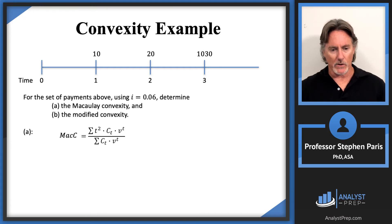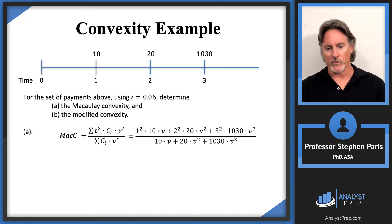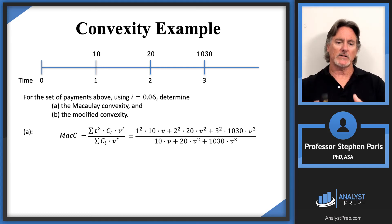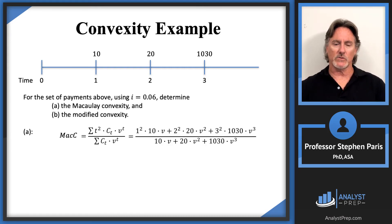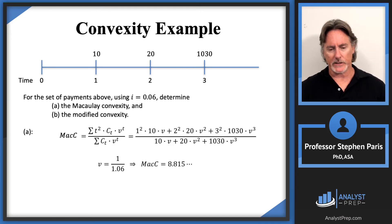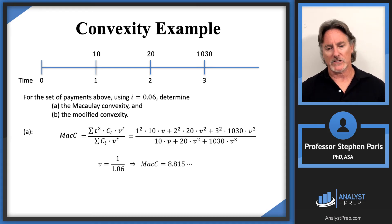For part A, the Macaulay convexity: in the denominator, take the present value of all payments — that's 10V plus 20V-squared plus 1,030V-cubed. In the numerator, instead of taking the time of the payment times the payment amount, take the square of the time. So that's 1-squared times 10 times V, plus 2-squared times 20 times V-squared, plus 3-squared times 1,030 times V-cubed. Using a 6% periodic effective interest rate, V equals 1/1.06, and the result is a Macaulay convexity of approximately 8.815.